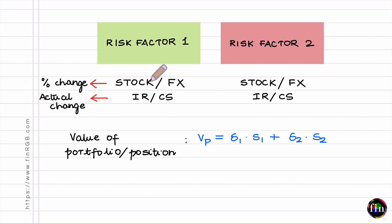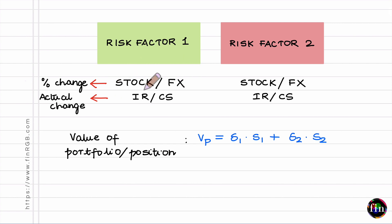Let's begin by categorizing risk factors into two camps, based on the most appropriate way to model changes in a given risk factor. If a change in the risk factor is best modeled as a percentage change, I would place that risk factor in camp one — this includes stock prices and foreign exchange rates. If changes are best captured as actual changes, we place that risk factor in camp two — this includes interest rates and credit spreads.